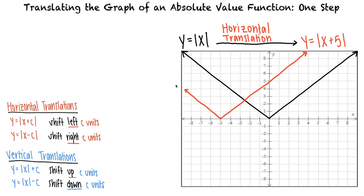We will have a vertical translation when a constant is added or subtracted outside the absolute value sign. When the constant is added, we translate the graph upward. And when the constant is subtracted, we translate the graph downward. That all sounds great! You seem to really understand how to translate the graph of an absolute value function.